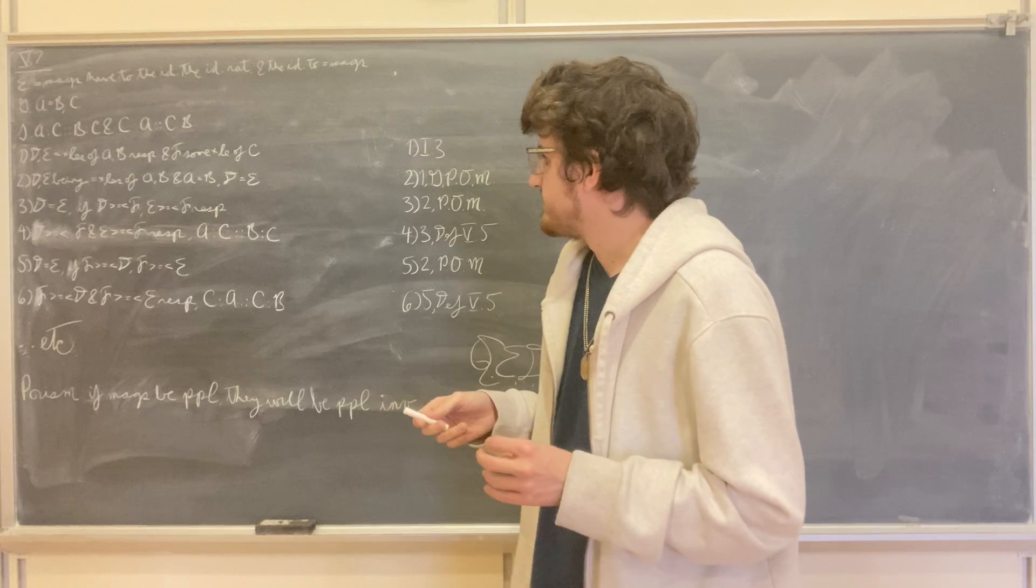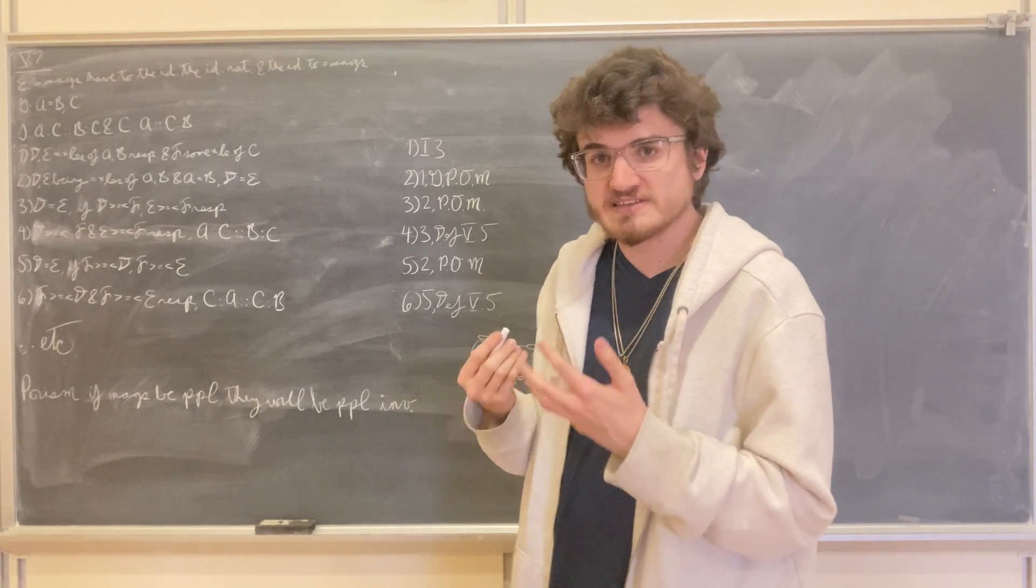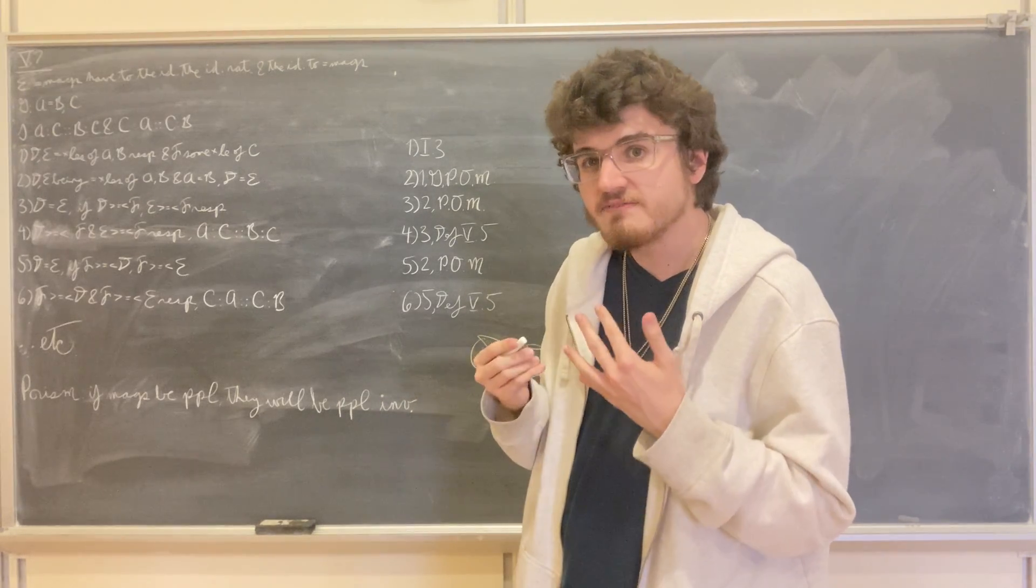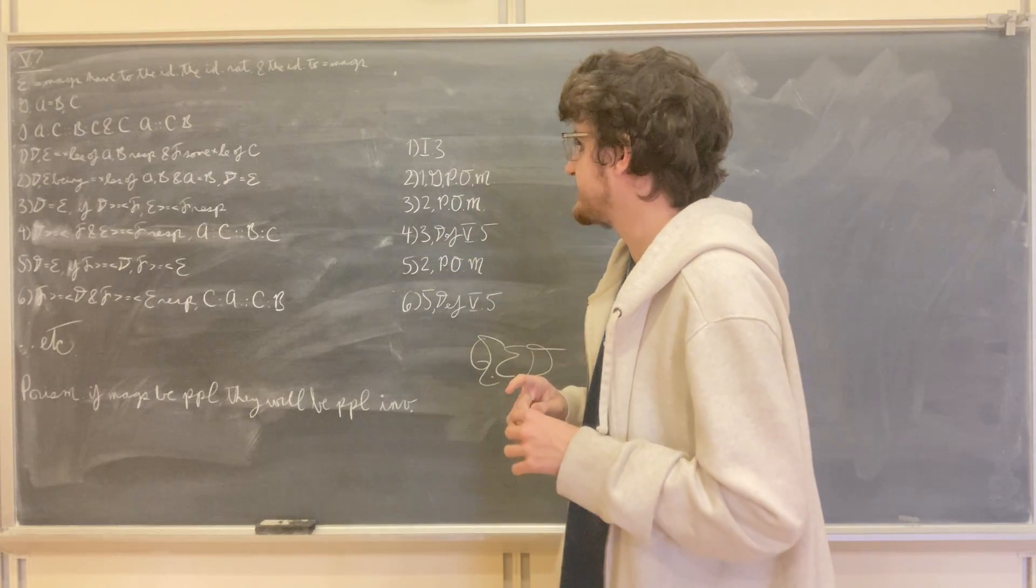So we have a relation of equal multiples that satisfies definition 5-5, so we can say that as A is to C, so B is to C.